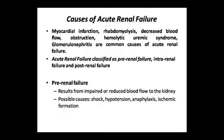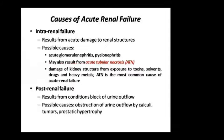Causes of acute renal failure include myocardial infarction, rhabdomyolysis leading to reduced blood flow, obstruction, hemolytic uremic syndrome, and glomerulonephritis. We have classified these into pre-renal, intra-renal, and post-renal categories. In pre-renal failure, blood flow to the kidneys is reduced or impaired due to shock, hypotension, anaphylaxis, and ischemic conditions.